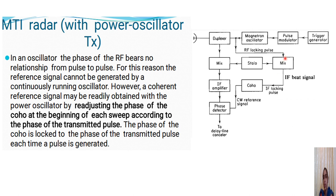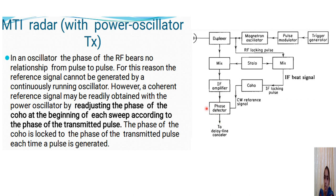We combine the signal from the transmission and the stable local oscillator and mix them to produce an IF beat signal. This IF beat signal is given as a reference to the coherent oscillator so that its phase is adjusted to match that of the transmitted pulse, and it can then be used as a reference. Finally, the Doppler frequency FD information is given to the delay line canceller.